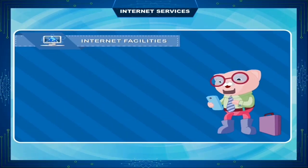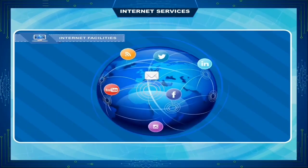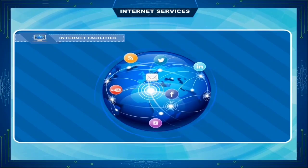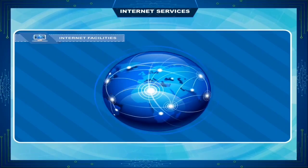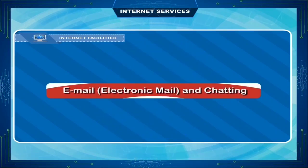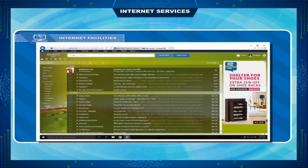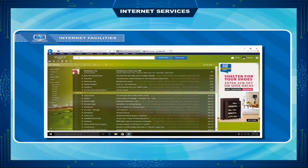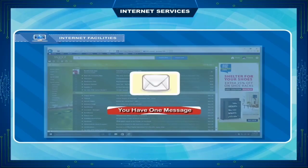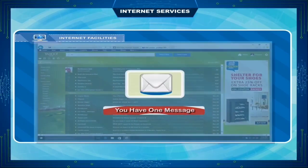Internet facilities. The internet has made the world a small place. It is useful to us in different ways and provides us several facilities. Internet facilities like email — electronic mail — and chatting. These facilities make it possible to send and receive mails from any part of the world within seconds.